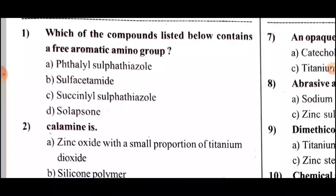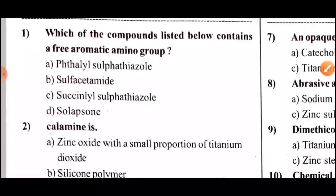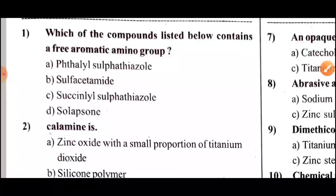Now we have 3 parts of Pharmaceutical Chemistry. This is the first topic. First question: Which of the components listed below contains free aromatic amino groups? Option B — Acetamide (Acetic Amide).